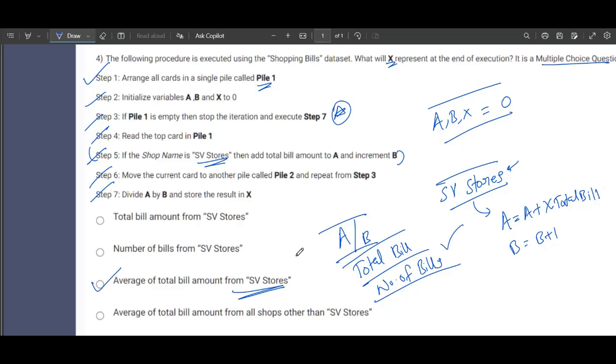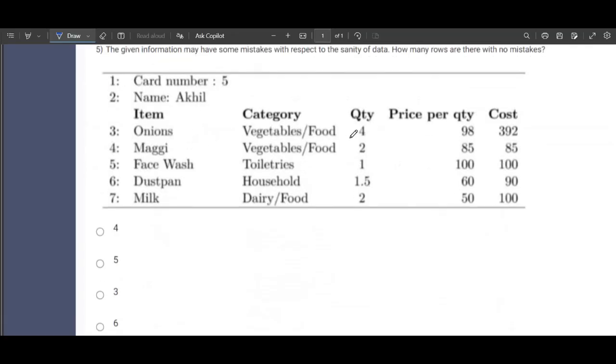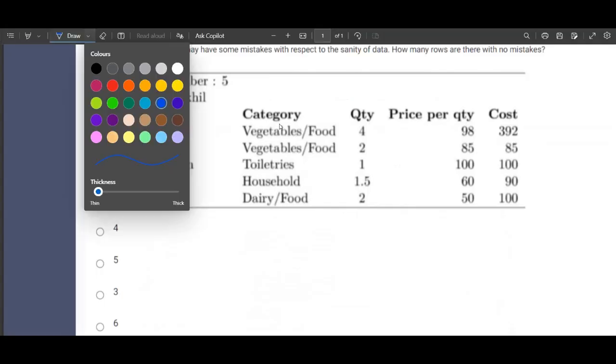Now coming to the fifth question. The given information may have some mistakes with respect to sanity of data. How many rows are there with no mistakes? So we'll have to check only those rows which are with zero mistakes.